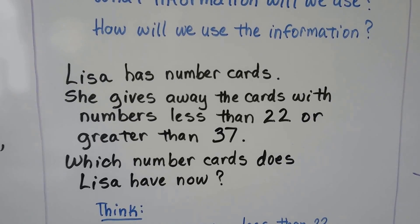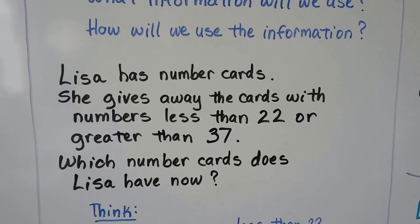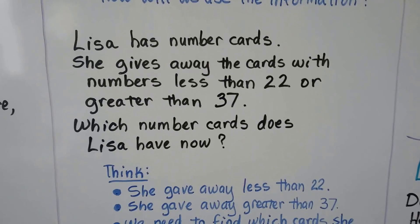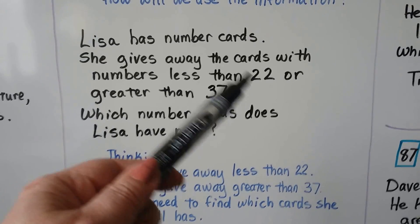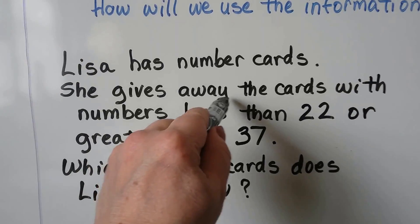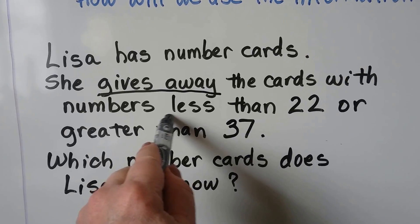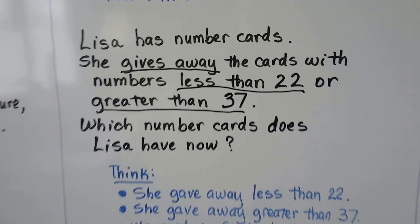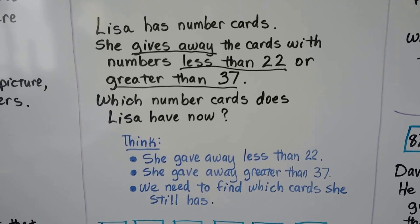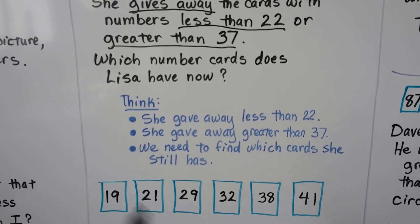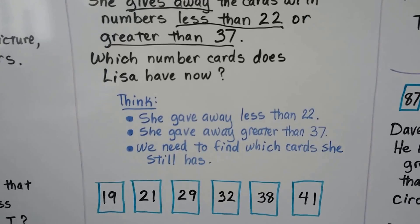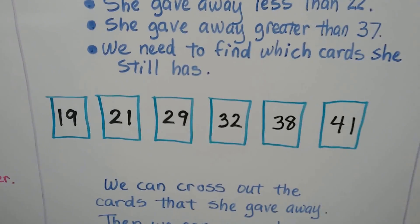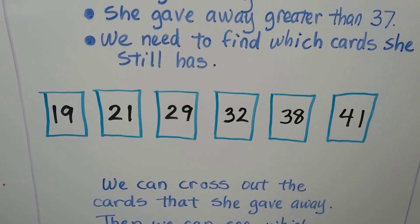Lisa has number cards. She gives away the cards with numbers less than 22 or greater than 37. Which number cards does Lisa have now? She gave away — notice it says 'gave away,' so she doesn't have them anymore. We can model the cards and put an X on the ones that don't fit. She gave away less than 22, so we cross out any number smaller than 22.